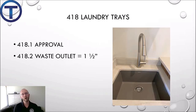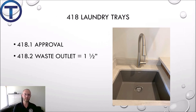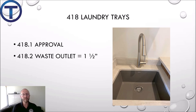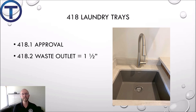4.18 goes over laundry trays. A laundry tray is a convenient fixture, especially if it's by your washer — you can rinse or treat stains before putting clothes in the washer. Basically a sink. 4.18.1 lists certain approvals and 4.18.2 states that we need at least a one and a half inch drain size for a laundry tray.